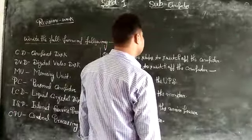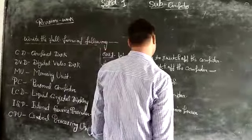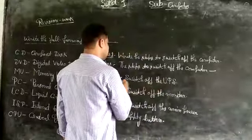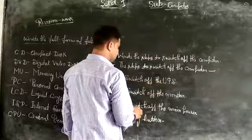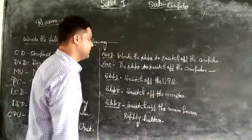Next question is: What are the steps to shut off the computer? The steps to shut off the computer are: turn off the computer, step first switch off the UPS, switch off the monitor, switch off the main power supply button.